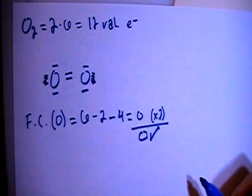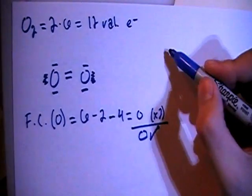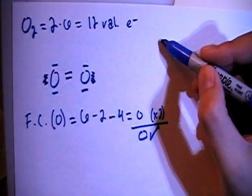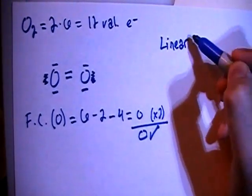Okay, so this should be the correct Lewis dot structure and we can talk about the shape real quick because there's only two atoms. This is going to be a linear shape.